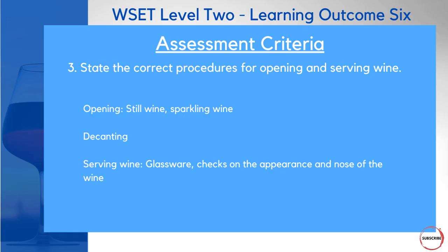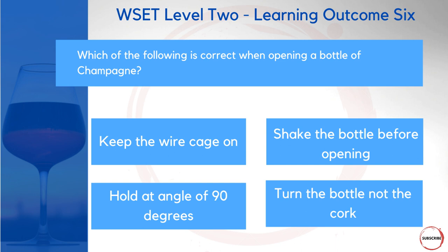Taking us from serving temperatures to actually serving the wine itself, we move on to assessment criteria number three. This is where you need to be able to state the correct procedures for opening and serving wines. The processes covered include opening a still wine, opening a sparkling wine, what decanting means and how it can benefit the wine, as well as checking the appearance and nose of the wine to ensure there are no wine faults. Thinking about the processes for opening bottles of wine, the next question is all about that.